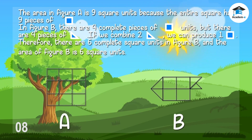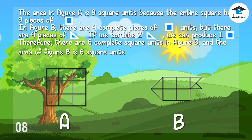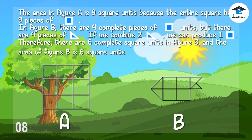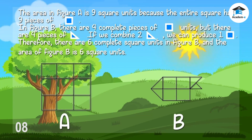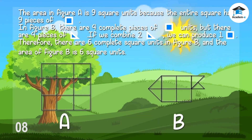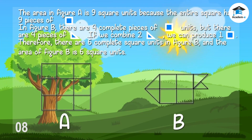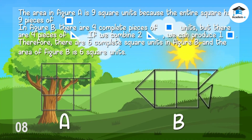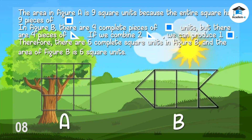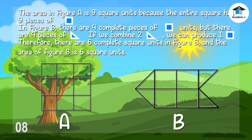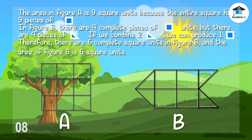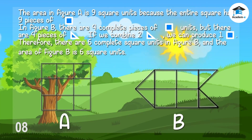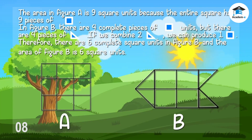Look at the two figures. The area of Figure A is nine square units because the entire square has nine pieces of squares. In Figure B, there are four complete square units but also four pieces of right triangles. If we combine two right triangles, we can produce one square. Therefore, there are six complete square units in Figure B, and the area of Figure B is six square units.